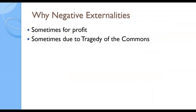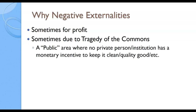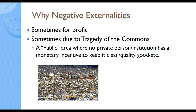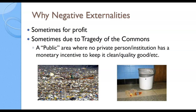Typically, positive externalities involve consumption and result in underproduction or underallocation — we're producing at Q1 but should be at Q2, meaning we should allocate more resources toward this good. For negative externalities, typically from production, we have overproduction and over-allocation — we're producing too much at Q1 when we want Q2 with less. Why do negative externalities exist? Unfortunately, sometimes it's just profit — it's cheaper for a company if they don't need to worry about things like pollution. Other times it's the tragedy of the commons: because of public areas where no private person has authority to keep them clean, things fall into disrepair.